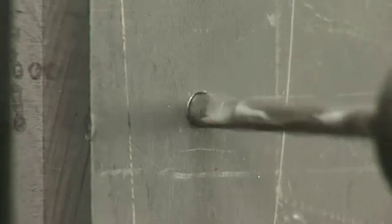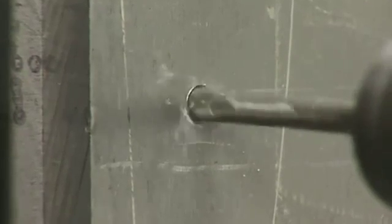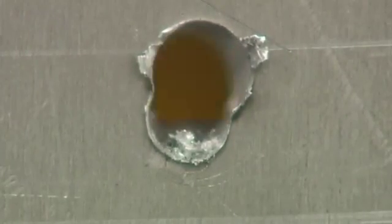One misaligned hole and at the very least construction time would be lost. At the very worst the whole panel, rib or wing would have to be scrapped.